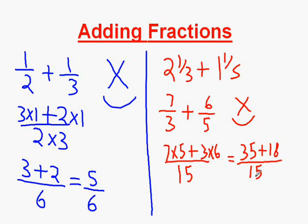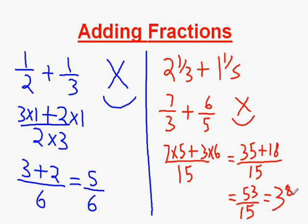Then we add the two together at the top to get 53 over 15. Now to put this into its simplest form we change it into a mixed number. There are 3 fifteens in 53 with remainder 8, so the answer is 3 and 8 over 15.